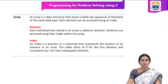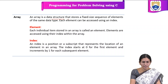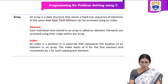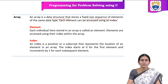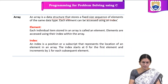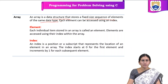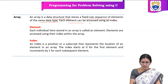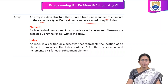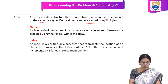First, coming to the definition of the array — array is a data structure that stores a fixed-size sequence of elements of the same data type. Array consists of elements of the same data type, that is, homogeneous elements. Each element can be accessed using an index.